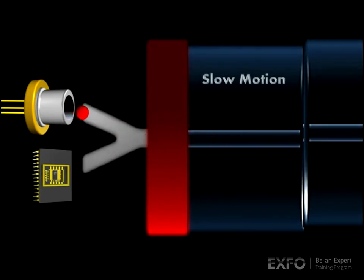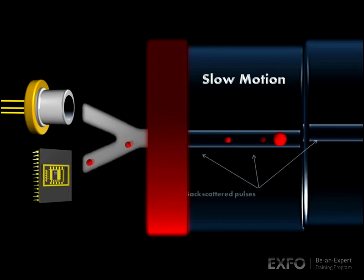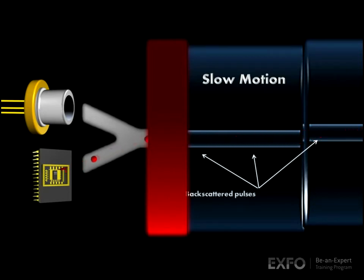If we look at individual pulses in slow motion, we can see that as the OTDR generates one pulse down the fiber core, multiple backscattered pulses are produced and travel in the opposite direction towards the detector.